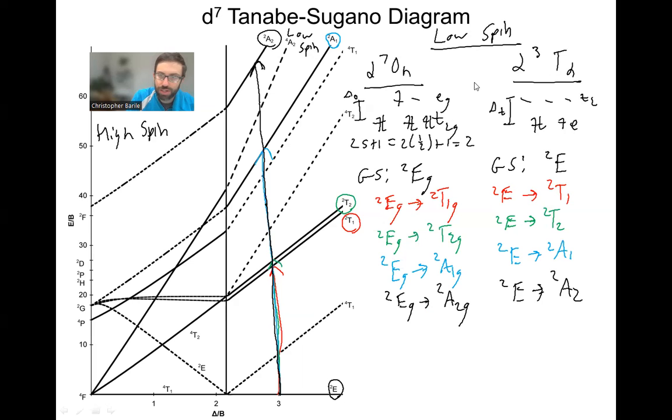So for low spin D3 tetrahedral complexes or low spin D7 octahedral complexes, the D7 Tanabe-Sugano diagram tells us that we expect four spin allowed transitions. So we should have four main peaks in our UV-Vis spectrum. However, some of these transitions might not actually appear on the spectrum because they're too high energy, possibly this one in black and this one in blue, but that's sort of an experimental thing. In theory, you're going to have four main peaks due to the four spin allowed transitions.